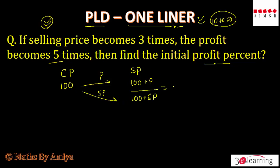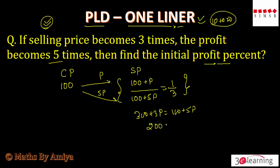And what is the ratio? The selling price becomes 3 times, so the ratio is 1 to 3. This gives us the equation. Cross multiplying: 300 plus 3P is equal to 100 plus 5P. This simplifies to 200 equals 2P. So P is nothing but 100.